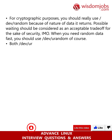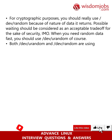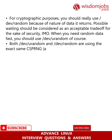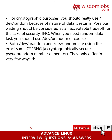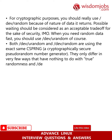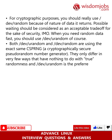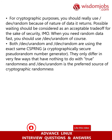Both /dev/urandom and /dev/random use the exact same CSPRNG — a cryptographically secure pseudo-random number generator. They only differ in very few ways that have nothing to do with true randomness, and /dev/urandom is the preferred source of cryptographic randomness on Unix-like systems.